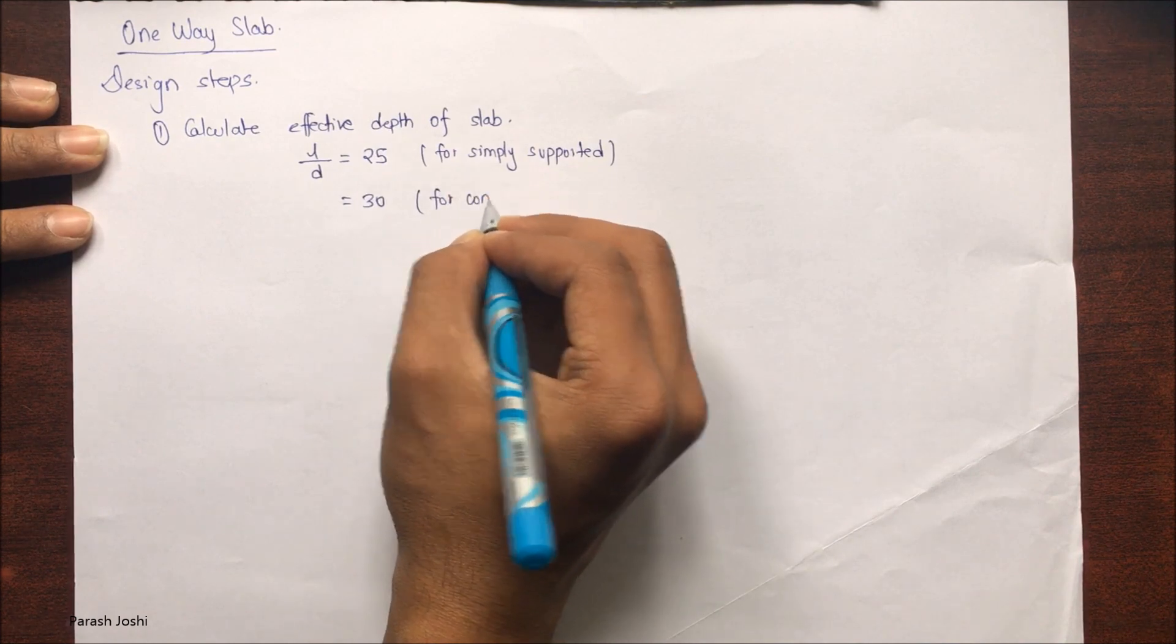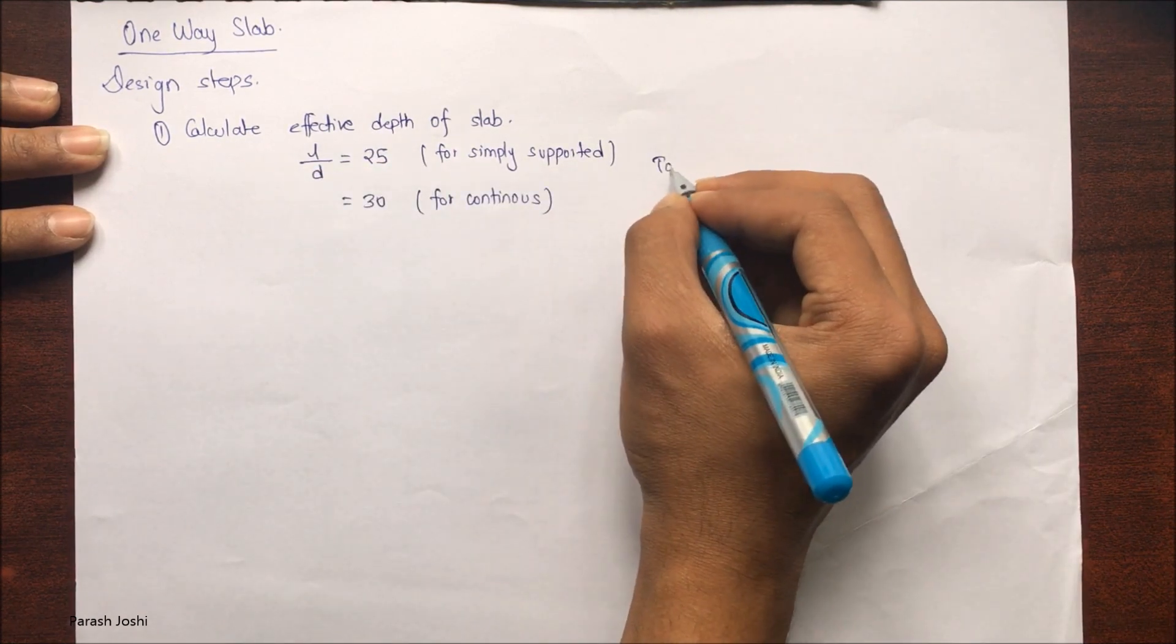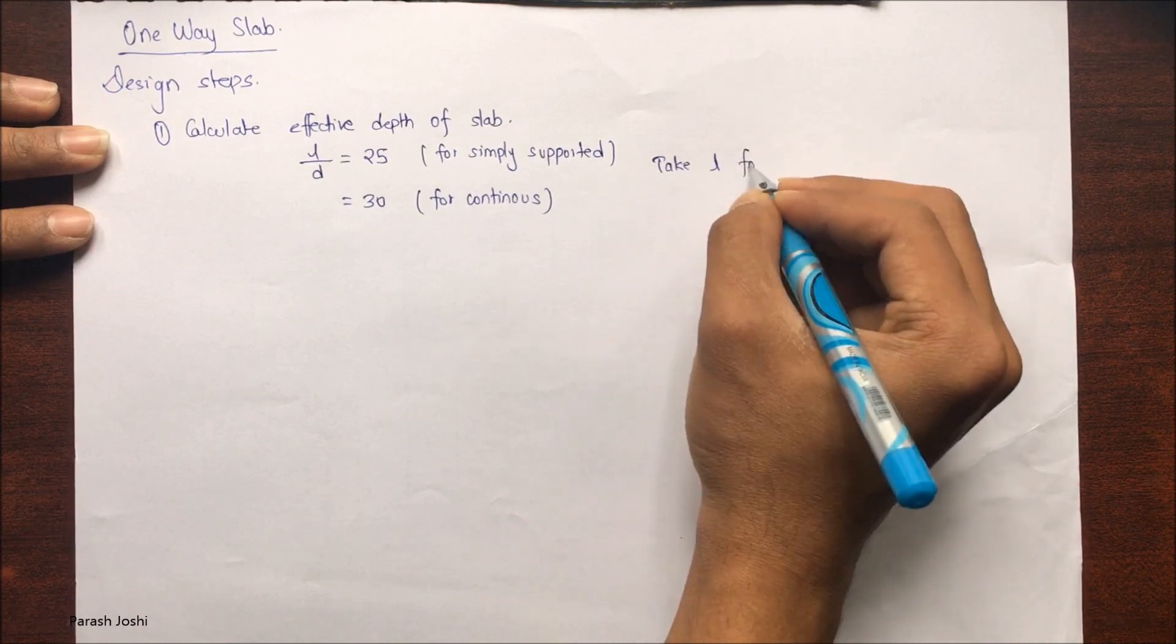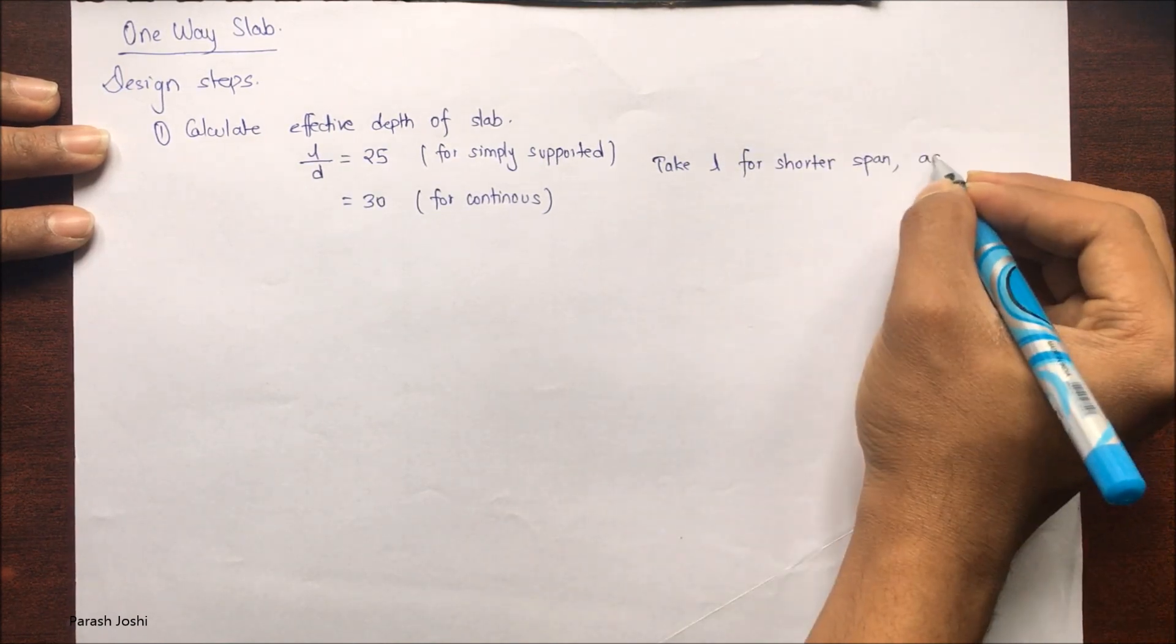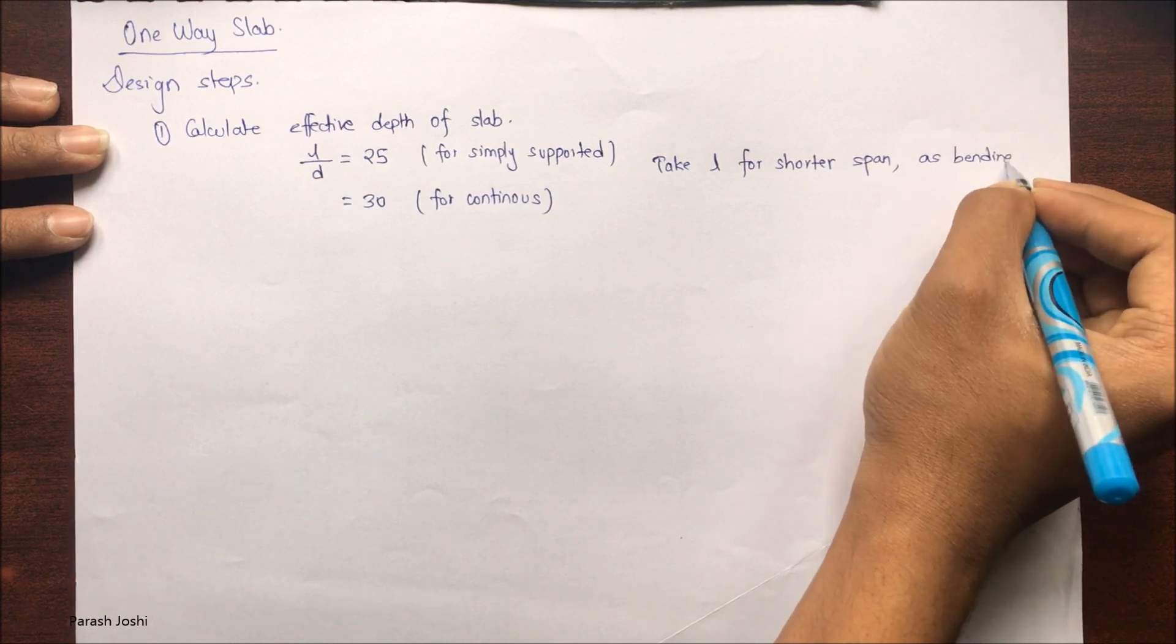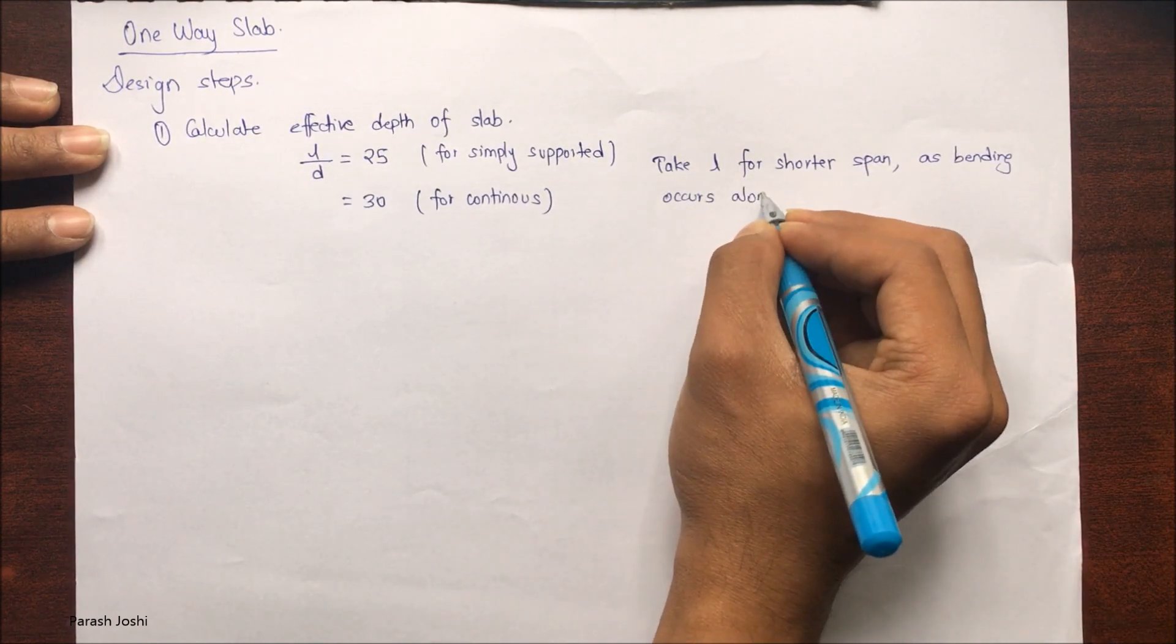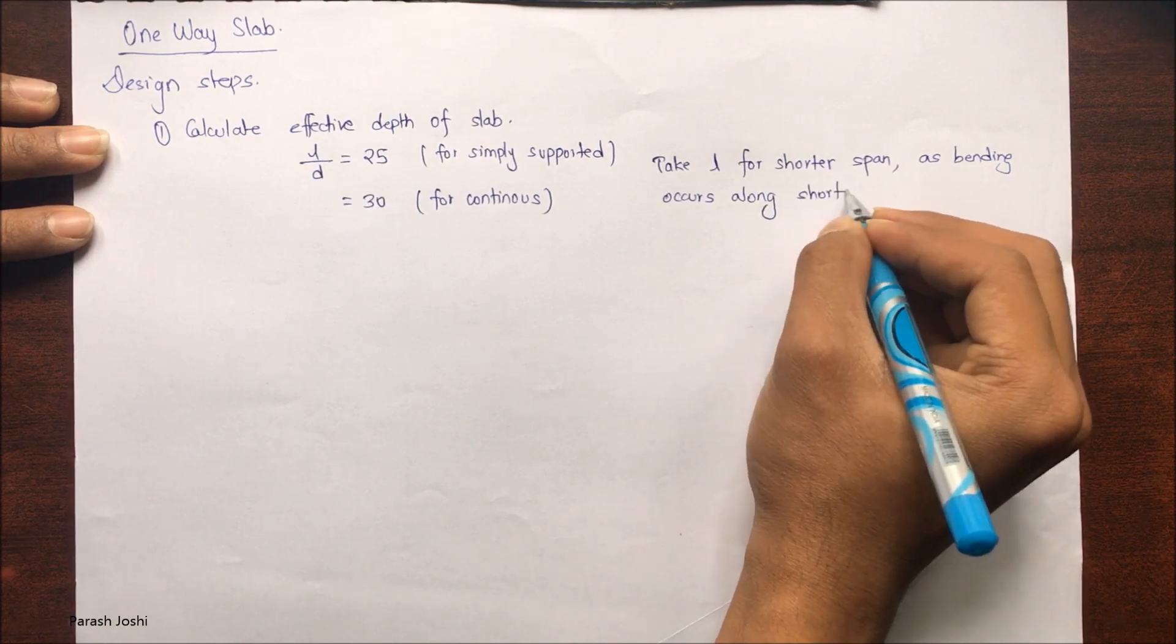The length is taken for the shorter side, as I already discussed in the introduction part of the slab. For the shorter side, because the bending occurs along the shorter direction.